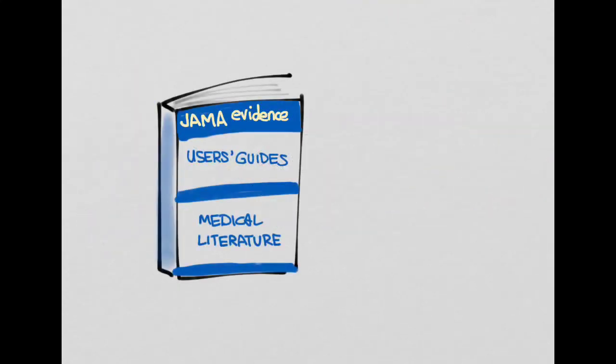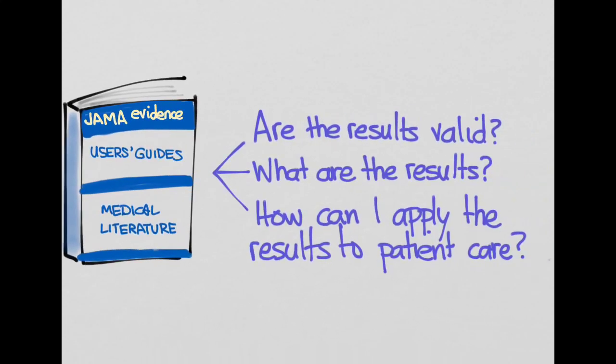Now let's look at how we would evaluate a systematic review. The process that we'll use to do this is the one that comes out of this book here, JAMA Evidence, User's Guide to the Medical Literature. This is a commonly used framework that is used to look at all kinds of articles, observational studies, clinical trials, etc. The three questions that are always answered are listed here. Are the results valid? What are the results? And how can I apply the results to patient care? Now let's look at each one of these quickly in regards to systematic reviews.